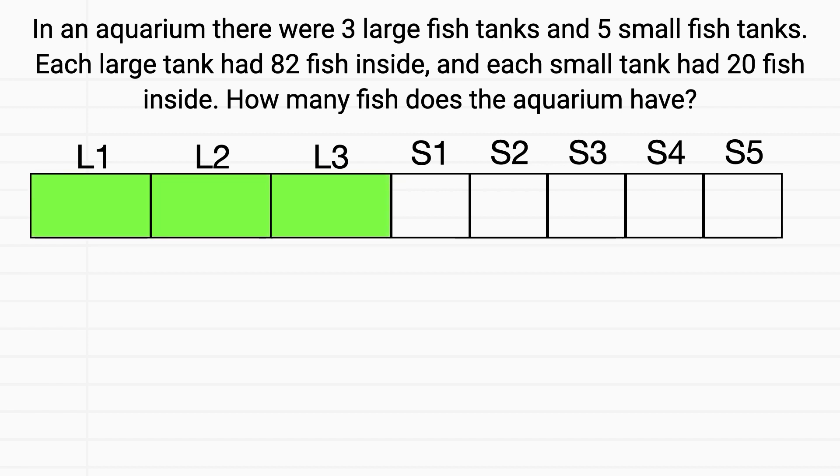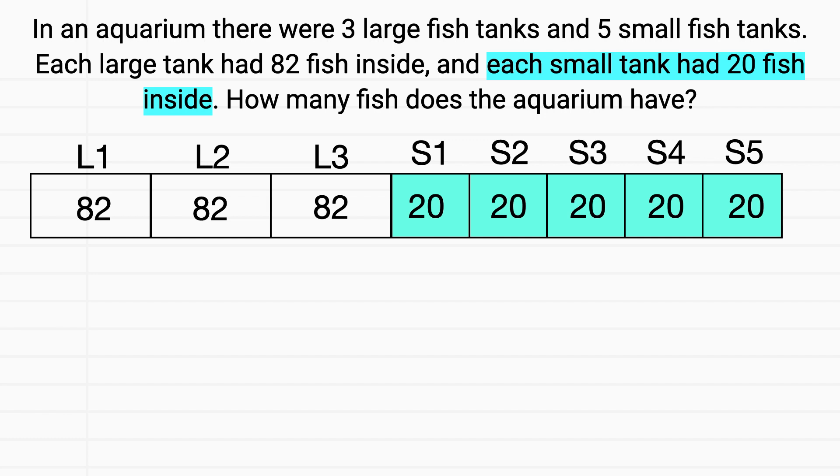Now, how many fish are in each large tank? The problem tells us each large tank had 82 fish inside. So I'll write the number 82 into my boxes representing the large tanks. How many fish were in each small tank? The problem tells us each small tank had 20 fish inside. So we'll write 20 into those boxes.